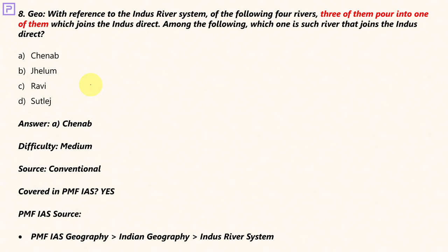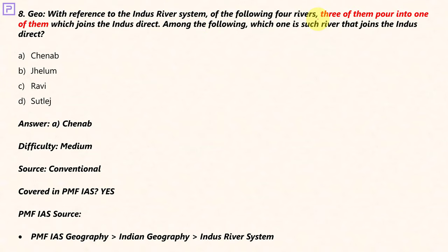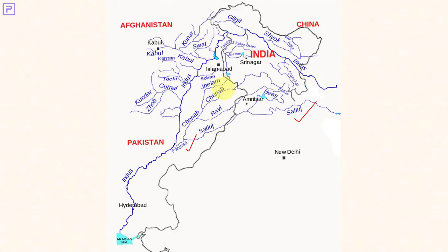With reference to the Indus river system, of the following four rivers, three pour into one of them, which joins the Indus directly. Looking at the map: Sutlej is the longest tributary of Indus. Sutlej and Chenab combine to form Panjnad. From the map it's clear that Jhelum and Ravi flow into Chenab, whereas only the Beas flows into Sutlej. It's fair to say Sutlej flows into Chenab rather than Chenab flows into Sutlej. The answer for this question is Chenab, though it's debatable.